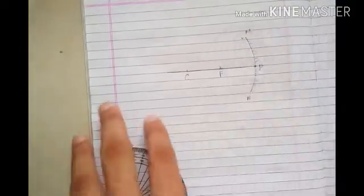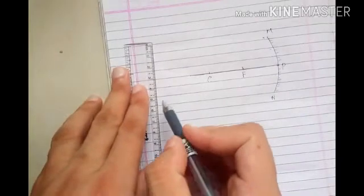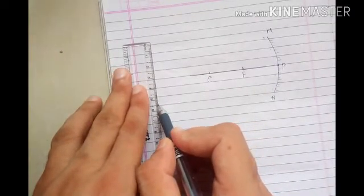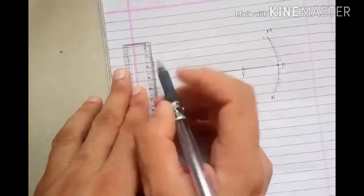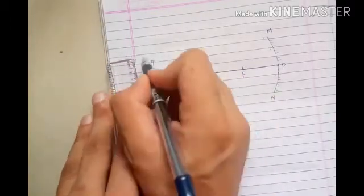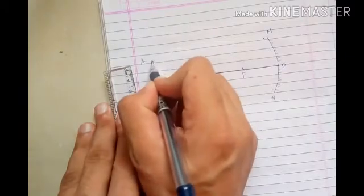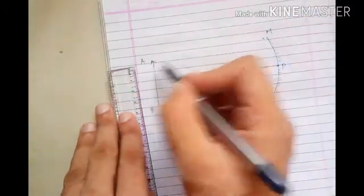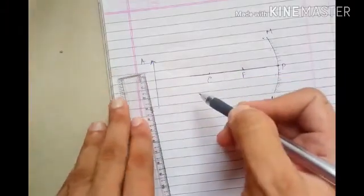In the first figure, the object is placed at infinity. Let's draw the object here at infinity. This is A, this is B. This arrowhead is important - this is the head of the object, and this is the tail.